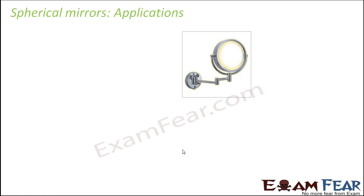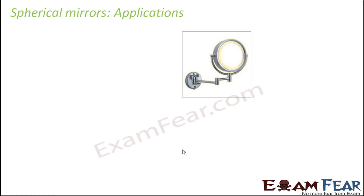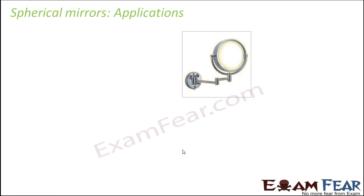Think of the shaving mirror. What kind of images are formed in a shaving mirror? While a person shaves, he wants to see an enlarged image of his beard so that it helps him to shave in a better way. An enlarged image can be produced by a concave mirror, because in the case of a convex mirror, diminished images are always formed.